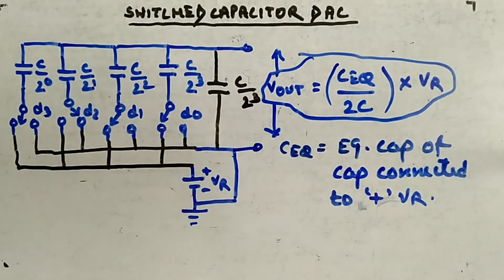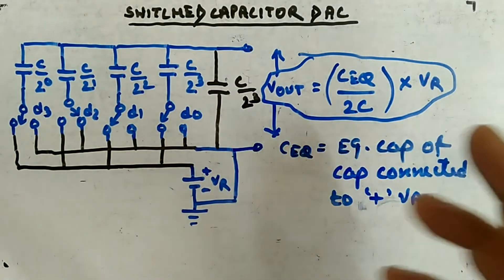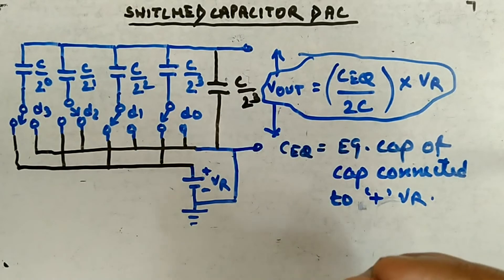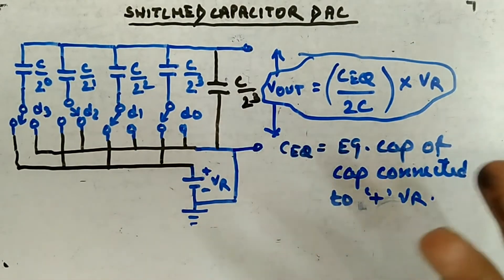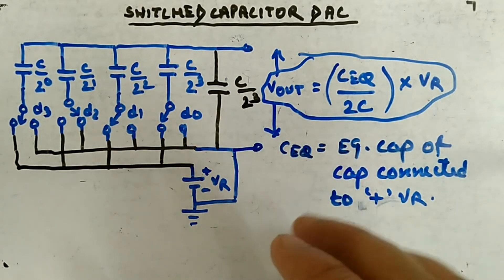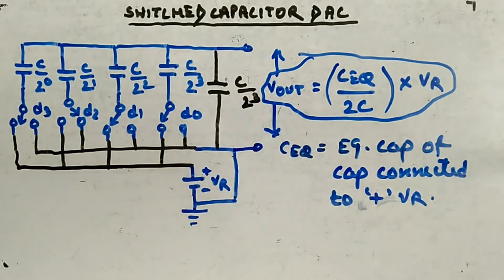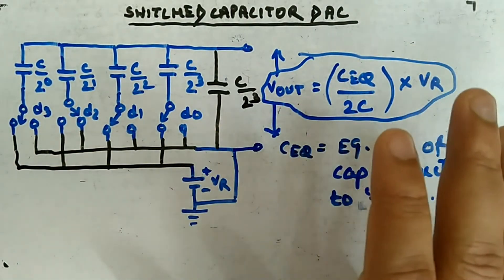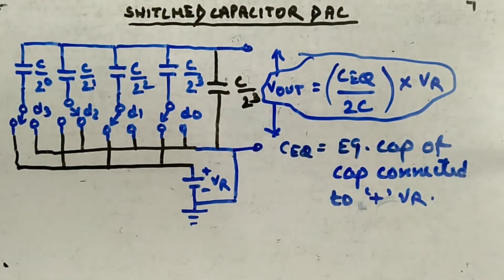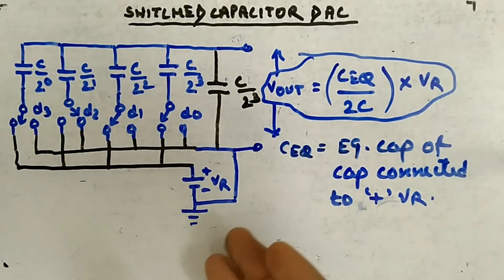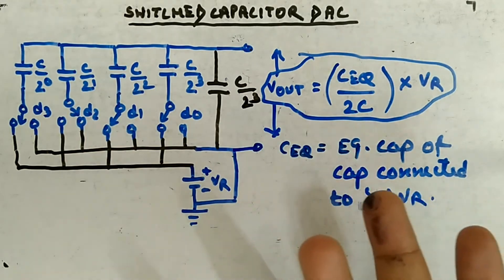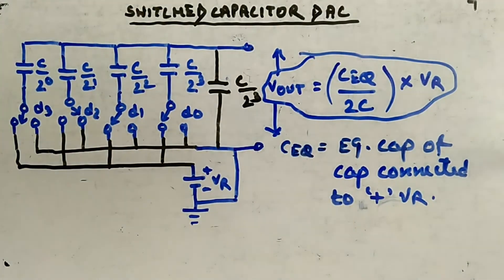What is the advantage of using the switched capacitor type? In integrated circuit terms, it is much more helpful because it is easier to design small capacitors of the order of a few picofarads, and they can perform the function of large capacitors as well. They are normally needed in low-frequency analog circuits. They are also used in constructing filters and amplifiers. There is one more type of digital to analog converter: the switched capacitor type.